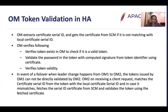How does OM token validation happen in HA? OM extracts the certificate serial ID from the token and fetches the certificate from SCM if it does not match the local certificate serial number. It then verifies the token exists in OM, validates the password in the token against the computed signature, and checks the token validity. In HA, for example, if a client got a token from OM1 and then a failover happens so OM2 becomes the leader, OM2 cannot directly validate the token because OM1 signed it with its own private key. So OM2 extracts the certificate serial ID from the token, calls SCM to get OM1's certificate, and uses that certificate to validate the token.